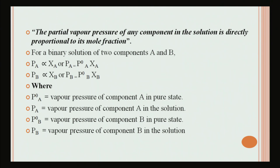For a binary solution of components A and B: P_A is directly proportional to X_A, or P_A = P°_A · X_A, and P_B is directly proportional to X_B, or P_B = P°_B · X_B. Here P°_A is the vapor pressure of component A in its pure state and P°_B is the vapor pressure of component B in its pure state, while P_A is the vapor pressure of component A in solution and P_B is the vapor pressure of component B in solution.